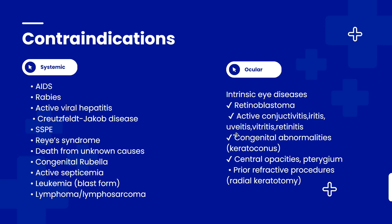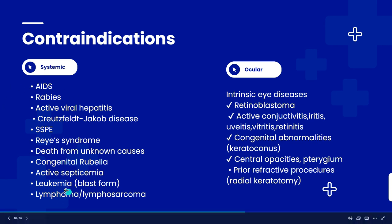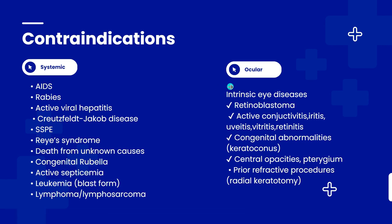Contraindications for eye donation: ocular contraindications include wrong eyeball shape such as keratoconus, and inflamed anterior tissues such as conjunctivitis, iritis, uveitis, vitreitis, retinitis, and other inflammatory conditions, as well as retinoblastoma (eye cancer) and central opacities or pterygium. Systemic contraindications include AIDS, rabies, lymphoma, leukemia, active septicemia, and rubella syndrome.